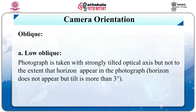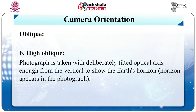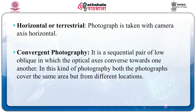Oblique — we have two types. Low oblique: the photograph is taken with a strongly tilted optical axis but not to the extent that the horizon appears in the photograph; that is, the horizon does not appear but tilt is more than 3 degrees. High oblique: the photograph is taken with a deliberately tilted optical axis enough from the vertical to show the Earth's horizon; that is, the horizon appears in the photograph. Horizontal or terrestrial: photograph is taken with the camera axis horizontal. Convergent photography: a sequential pair of low oblique photographs in which the optical axes converge towards one another, covering the same area from different locations.